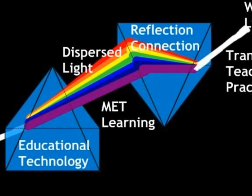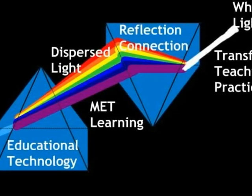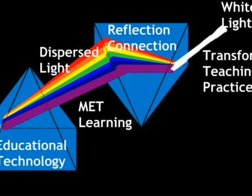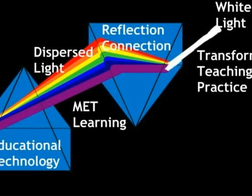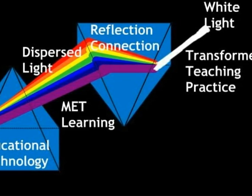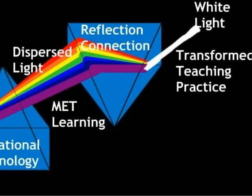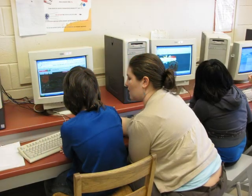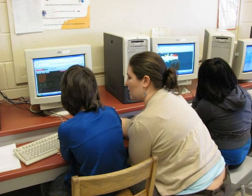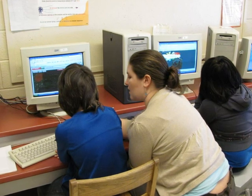When white light passes through the first prism, it is dispersed and it results in the seven component colors. The color spectrum will be used to represent different facets of the learning undergone in the MET program. Teachers reflect light in the form of facilitating and promoting student learning, and as this light is reflected through a prism — the use of educational technology — it is dispersed into the seven colors.